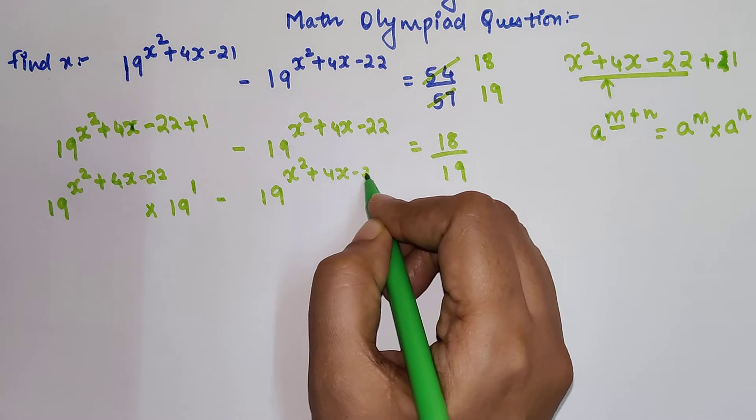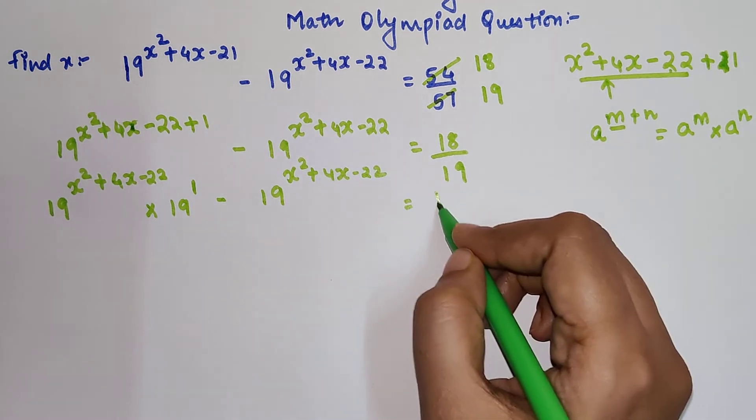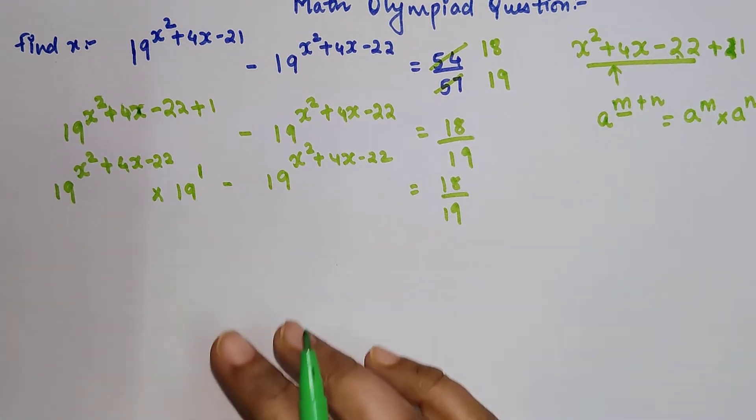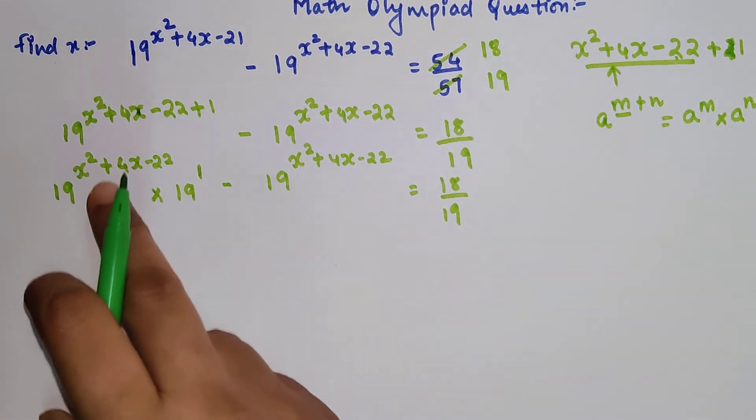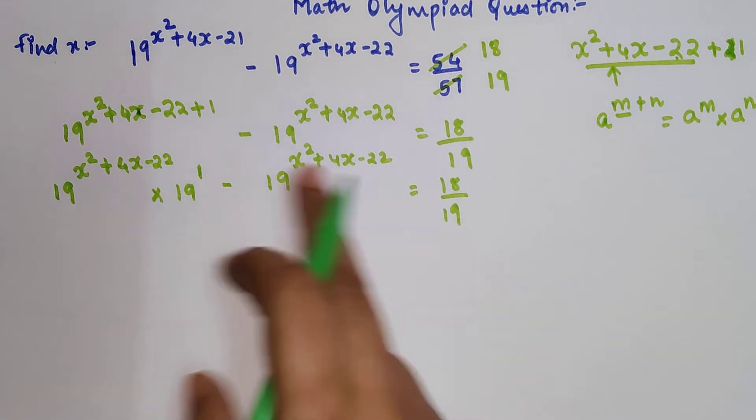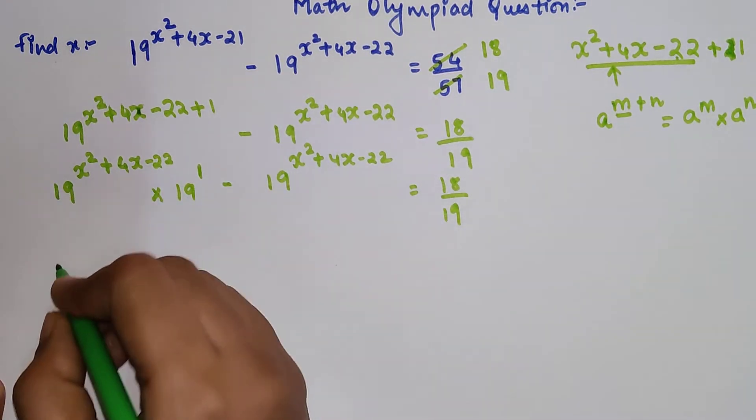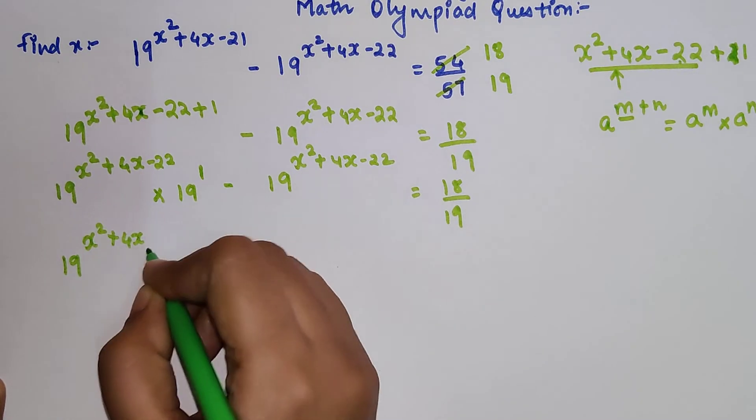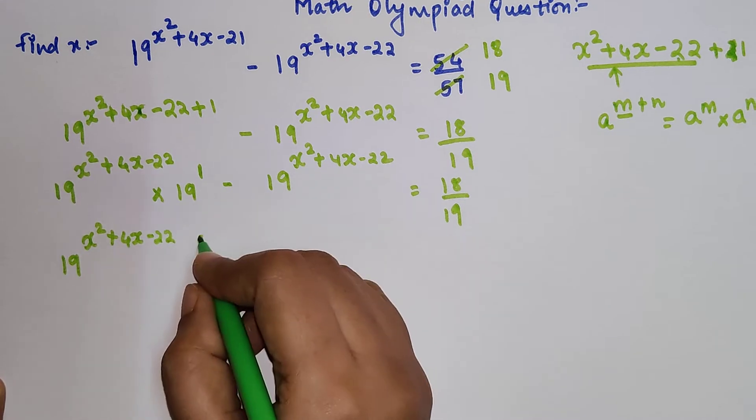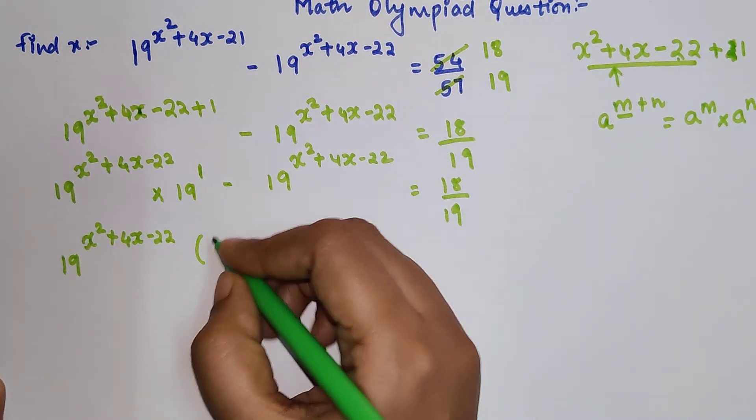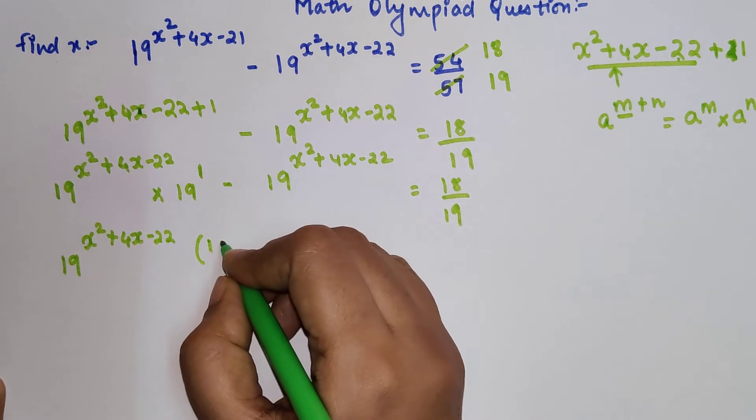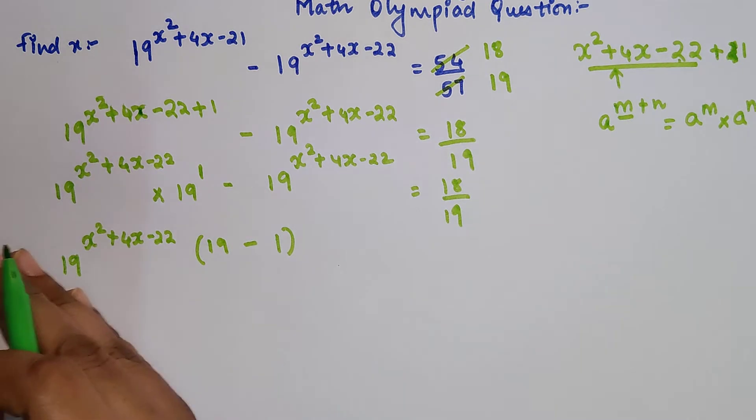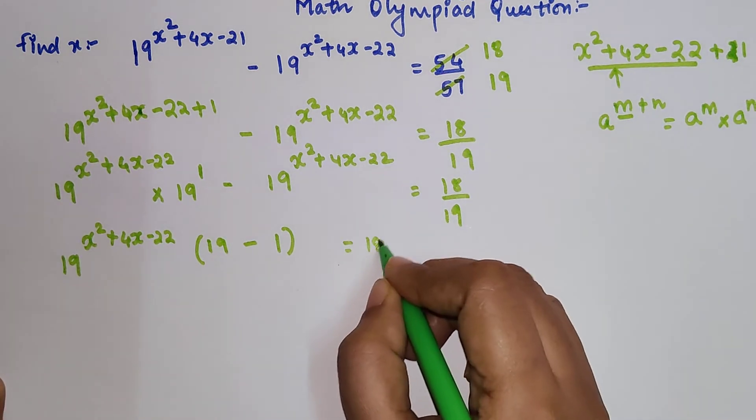I'm sure you understand why I split this—because I wanted the common term. We can take 19^(x²+4x-22) common, and we get 19^(x²+4x-22) × (19-1) = 18/19. So here we get 19^(x²+4x-22) × 18 = 18/19.